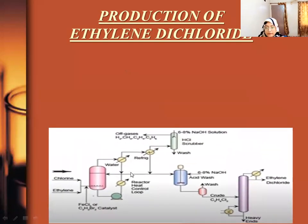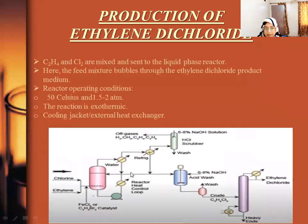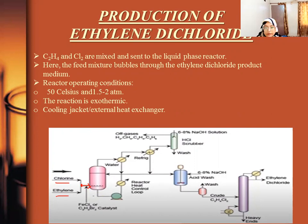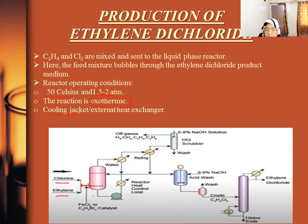Now we will look at the process flow diagram (PFD) for the production of ethylene dichloride. Ethylene and chlorine are mixed before sending to the reactor — first chlorine, then ethylene. The reactor operating conditions are 50°C and 1.5 to 2 atm. Since the reaction is exothermic, a cooling jacket is used to maintain the reactor temperature.